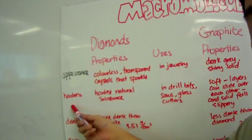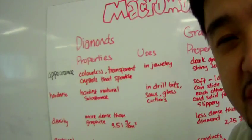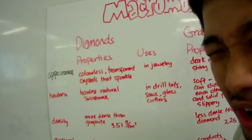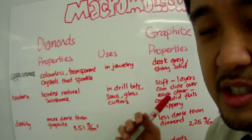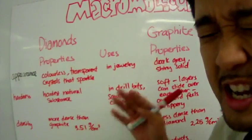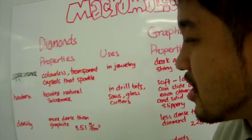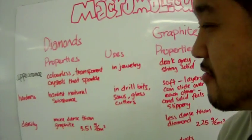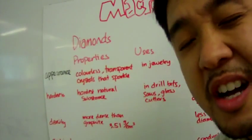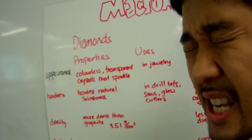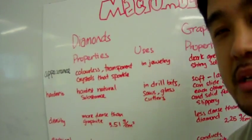Another property: hardness. How hard is it? Well, it's the hardest natural substance. So hard it's used in drill bits, saws that cut metal, and glass cutters. It's really hard. And the reason why it's hard is because of all those millions and billions and billions of covalent bonds.